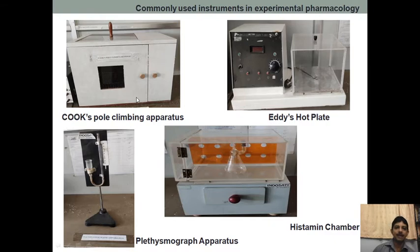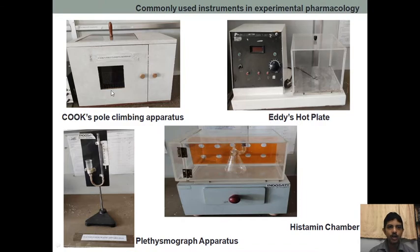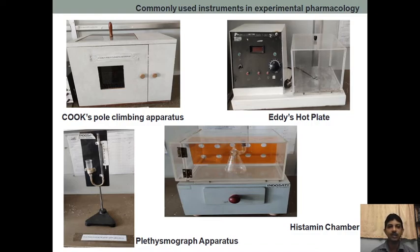Next, we have seen the Cook's pole climbing apparatus. It acts on the CNS. There is a pole, and grids where you can apply electric current. We keep the rat here and with general tendency, the rat will want to climb the pole. You can also produce sound or electric shock. Before and after drug treatment, we check how quickly the animal climbs the rod. Depending on that, we can understand whether the drug is acting on the CNS or not.